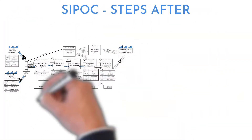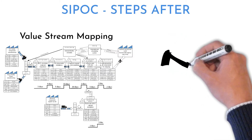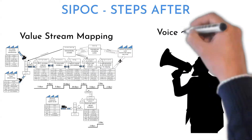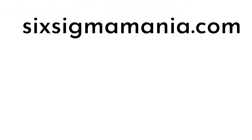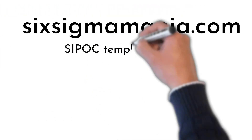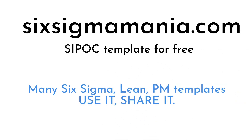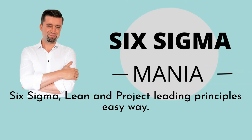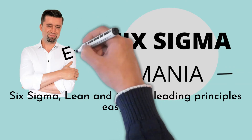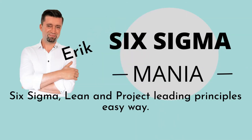The next tool to be used after SIPOC can be value stream mapping or voice of the customer, to understand the process in more detail. And that's it! Take a look under the video where you'll find a link to download the SIPOC template for your usage, with a brief description of each section — you are free to share and distribute it. Visit my blog where you'll find helpful Six Sigma, Lean, and project leading templates and information. Do not hesitate to post your comments, questions, or themes you are interested in seeing on this channel. Thank you.